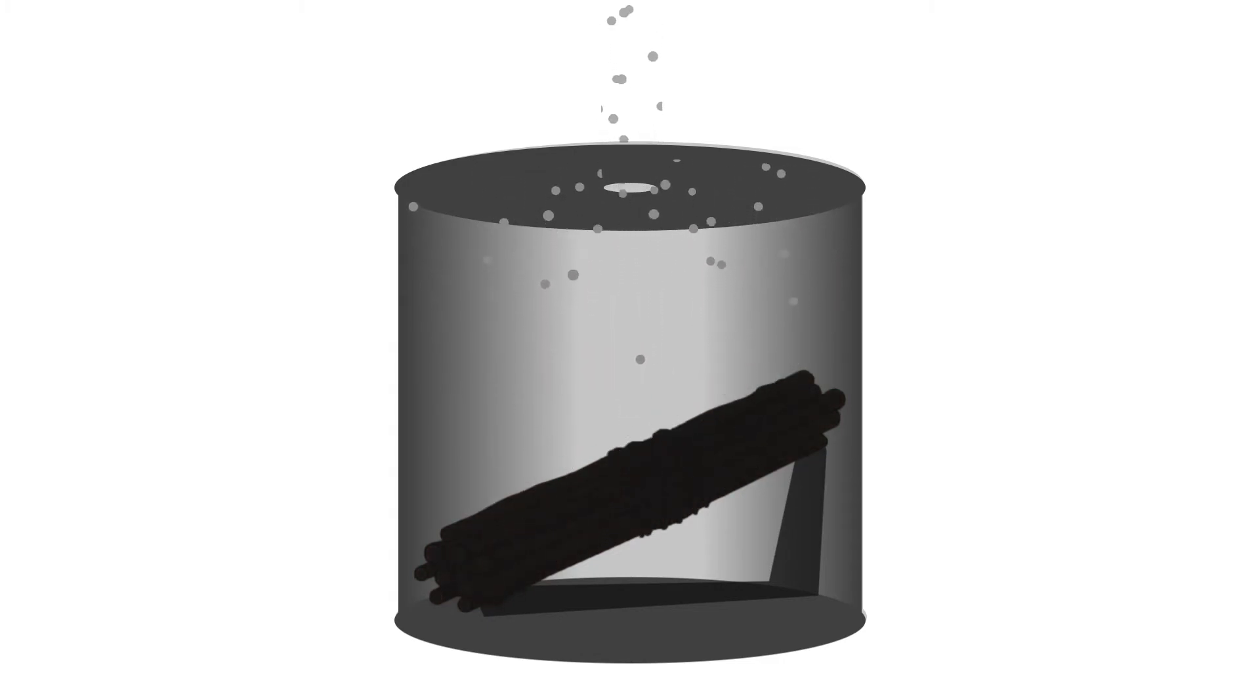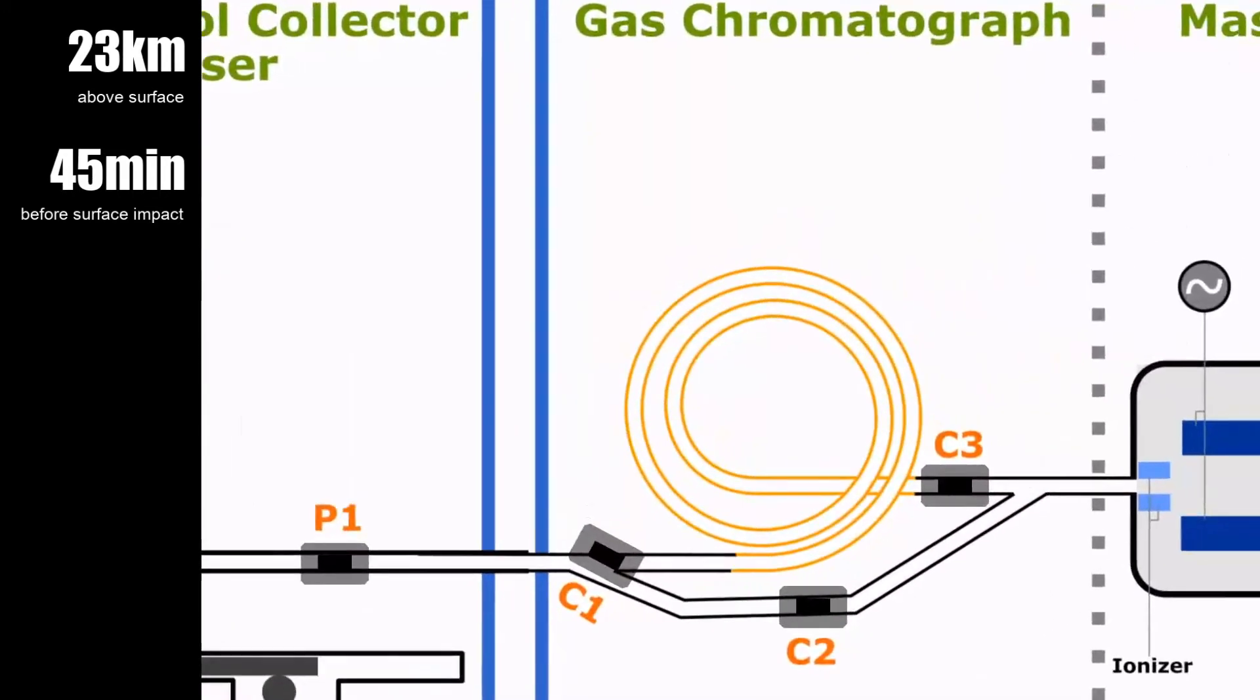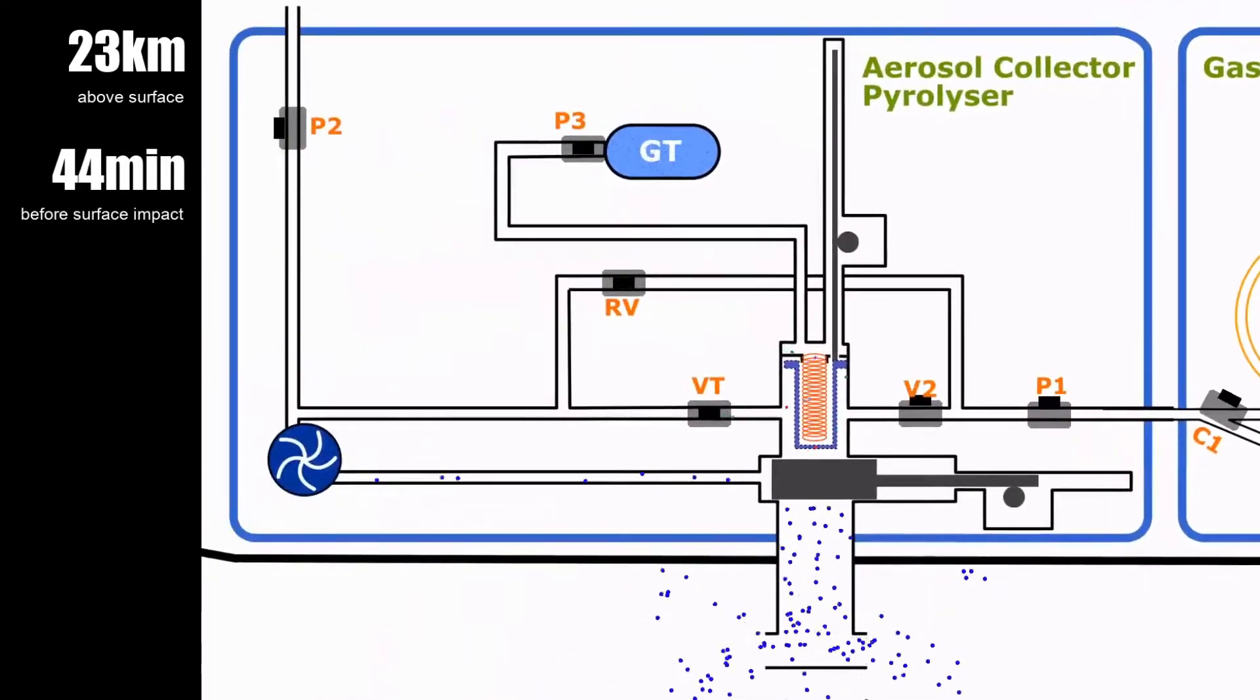46 minutes before surface impact, the gas product created by pyrolysis now has to be sent to the gas chromatograph mass spectrometer. Valves V2, P1, C1, and C3 are now opened. Valve P3 is also then opened to allow pressurized nitrogen gas from the tank GT to force the gas product through the GCMS.